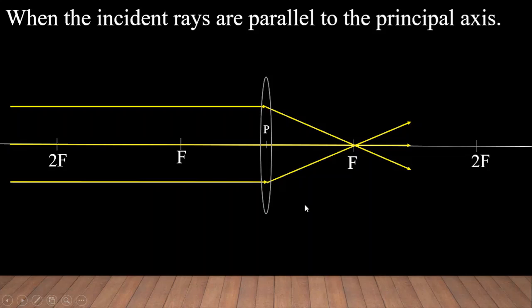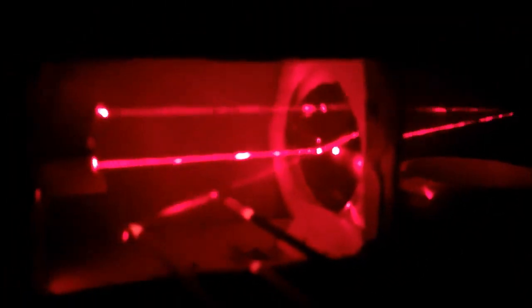Before that, let us see this particular case using lasers. Here you can see two laser beams parallel to each other coming from two laser torches. I have used agarbattis so that we can see the laser beams very clearly due to the smoke. The two parallel beams are incident on the lens, and after refraction they converge and meet at the focus. You can see the two spots far away from the lens.